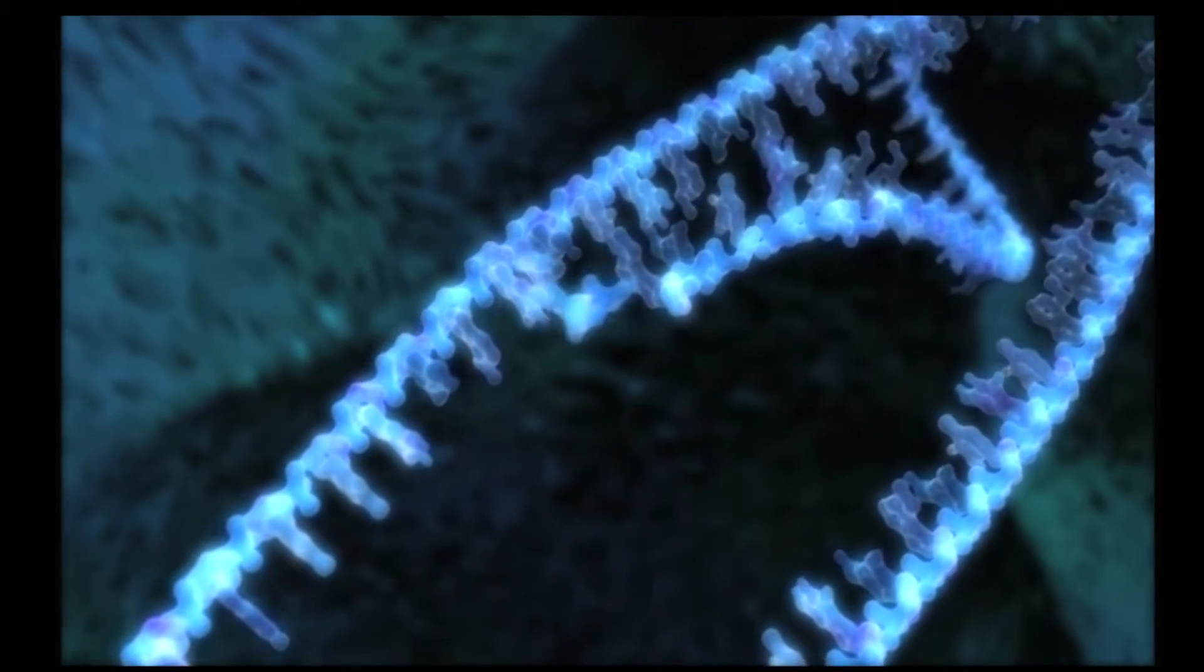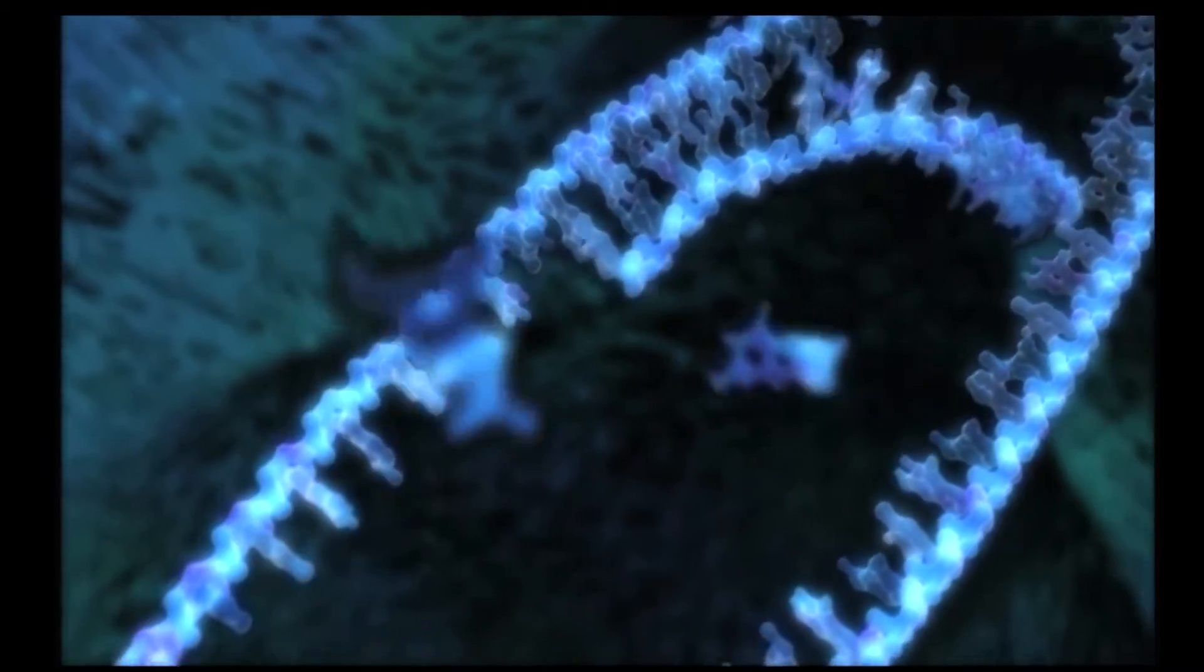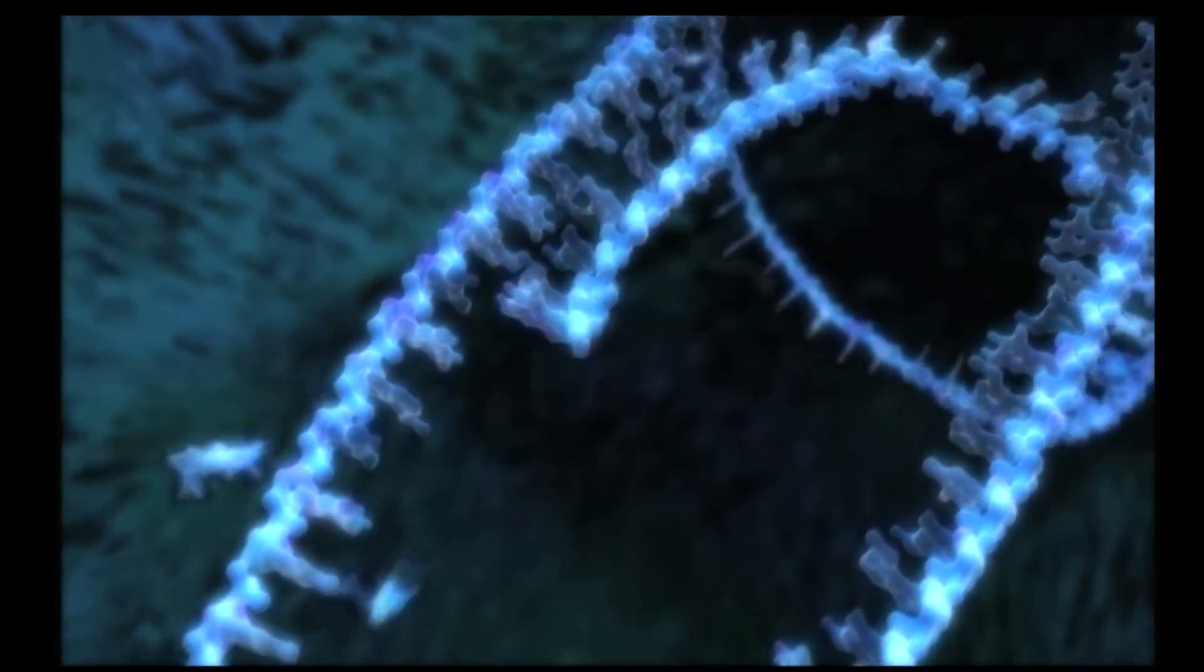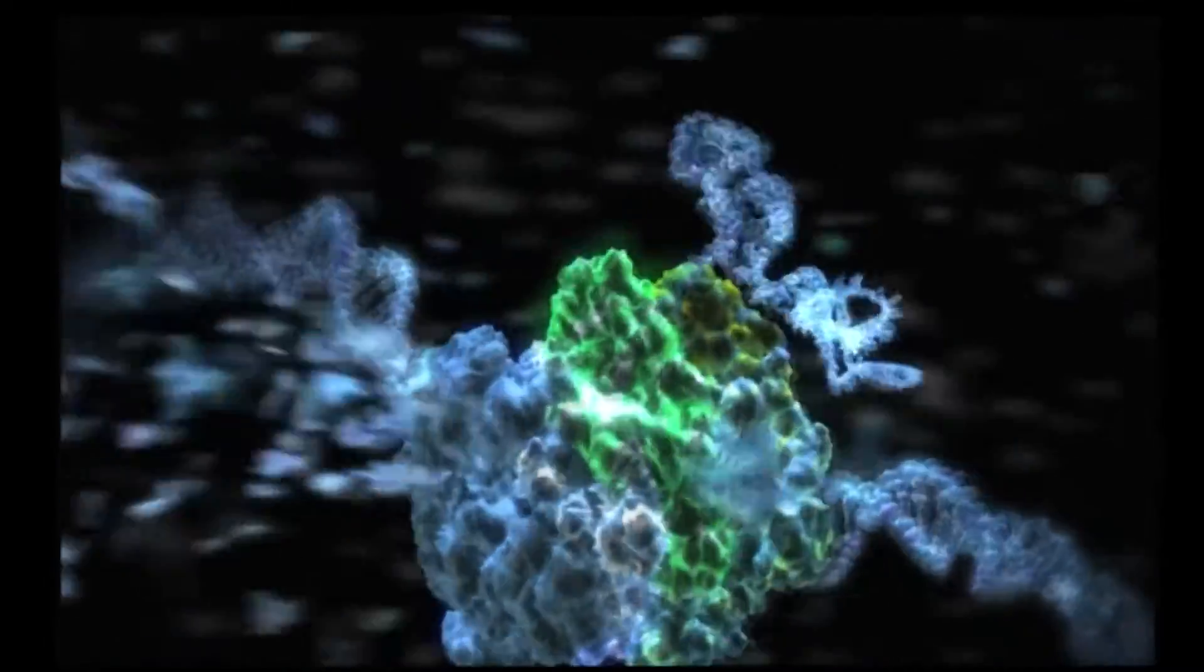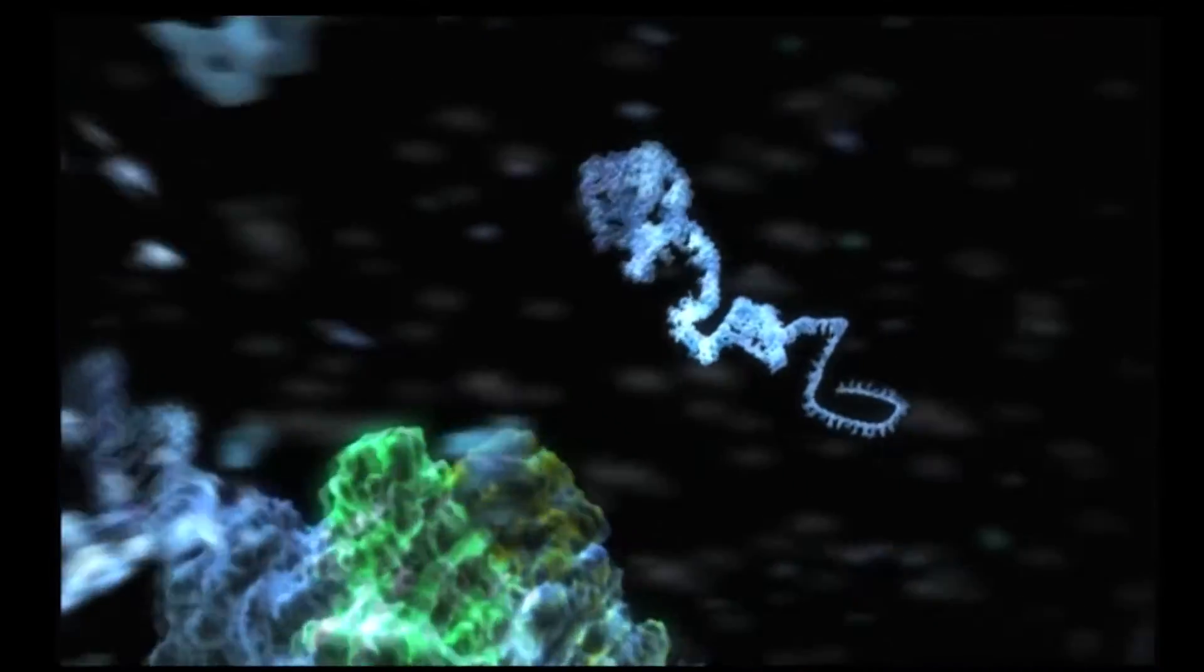Here we see this copy, a messenger RNA molecule, being constructed inside the polymerase as individual bases are positioned and added to the growing strand. Now we see the polymerase in action from the outside as it spits out the messenger RNA transcript.